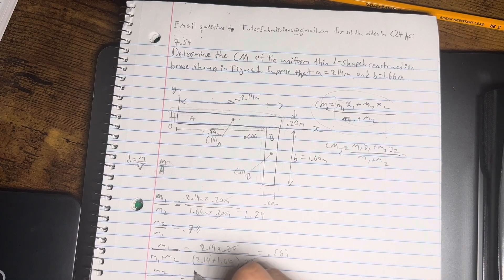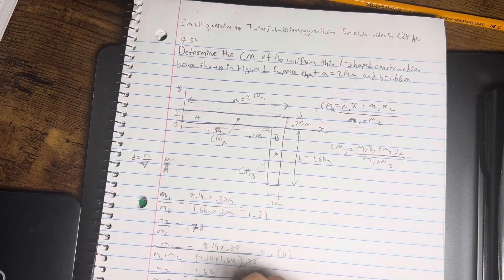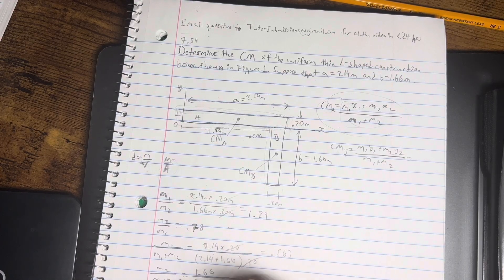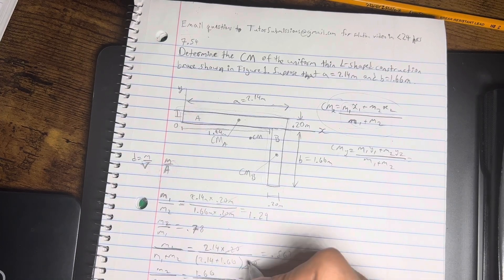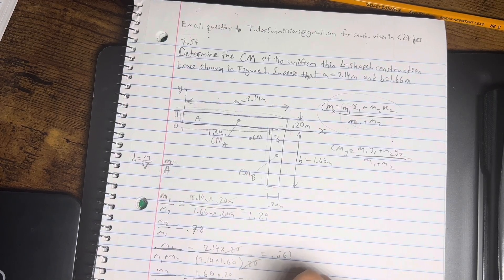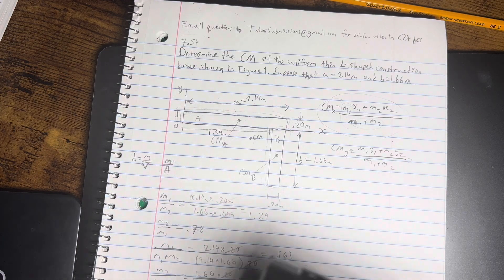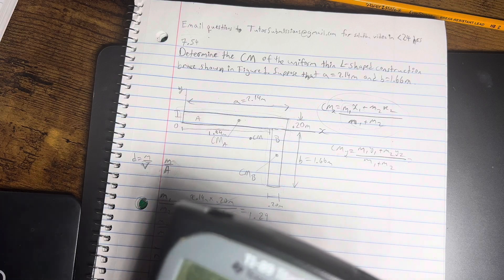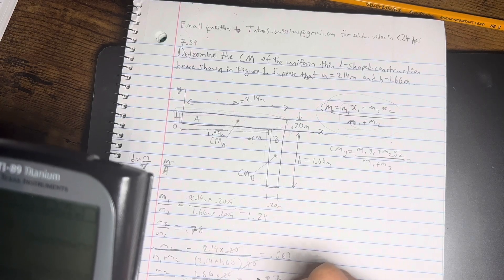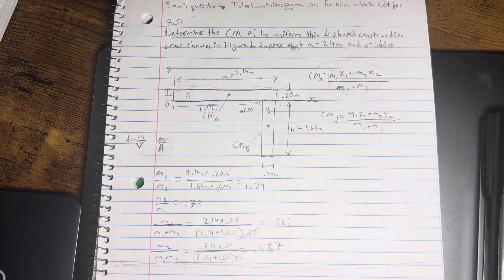And then, same thing for here. We're going to do M2, it's going to be 1.66 divided by 2.14 plus 1.66. Once again, instead of the masses, we're doing the areas of these respective blocks. And for the area, you have to also have the width, but these are going to cancel. So, that just leaves us with 1.66 divided by 1.66 plus 2.14, which is 0.437. All right. And so now we have these.